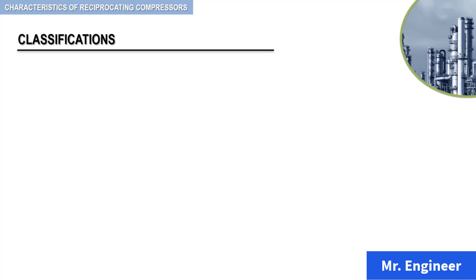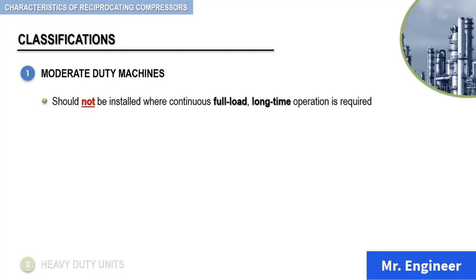Manufacturers design reciprocating compressors to match the exact need of the user. These compressors fall into two general groups: moderate-duty machines and heavy-duty machines. Moderate-duty compressors are designed for reliable operation over a reasonable service life, but should not be installed where continuous full load long-time operation is required. This does not mean that these units will not operate for long full load periods. It does only mean that maintenance costs will be greater than normal.